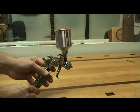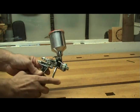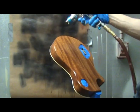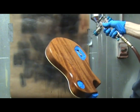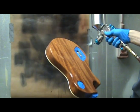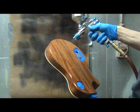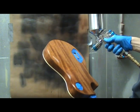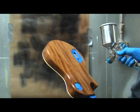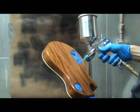HVLP guns were designed to improve transfer efficiency so that more material actually ends up on your project instead of around your shop and in the atmosphere. Just like the name says, air is used at a higher volume with less pressure so that less finish bounces off your project and into the atmosphere.